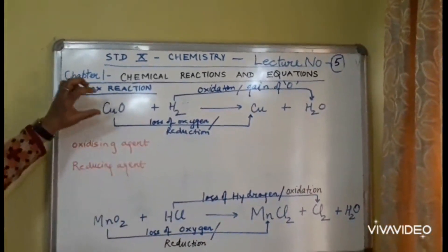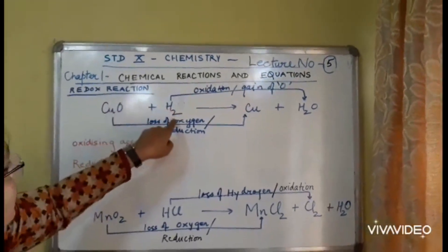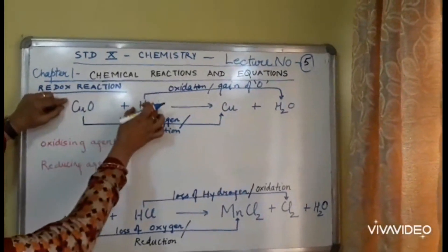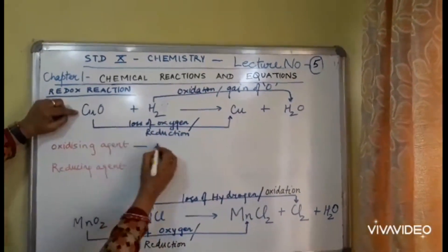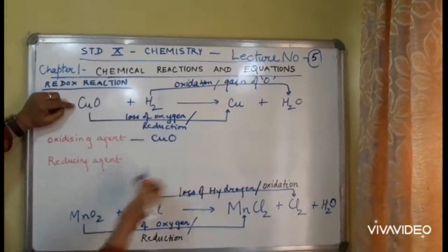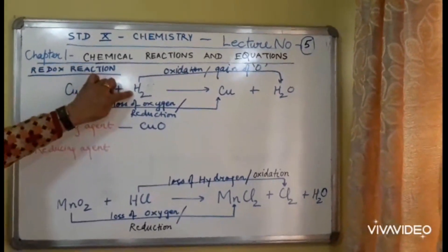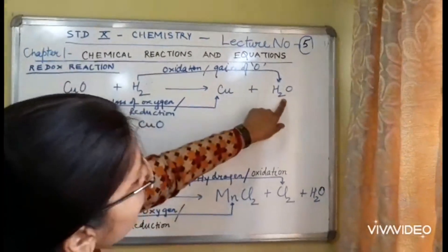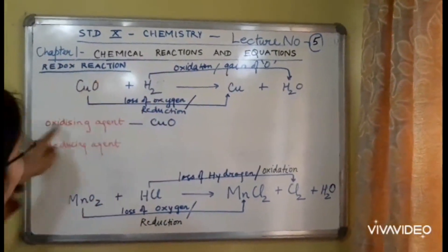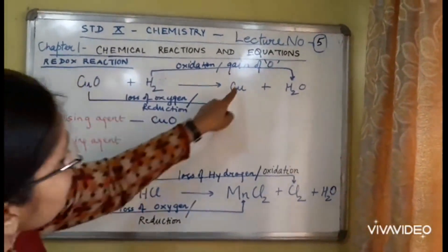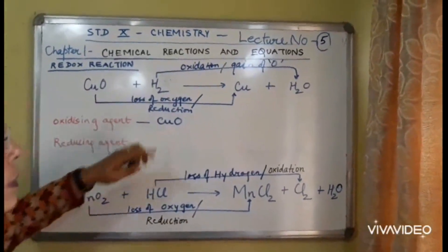Now look at this equation again. CuO lost its oxygen to H2. That means CuO is helping H2 to get oxidized. So CuO is an oxidizing agent. Can you follow? CuO helps H2 to turn into H2O. That is get oxidized. That means CuO is an oxidizing agent. Jiska reduction hota hai, woh oxidizing agent hota hai.